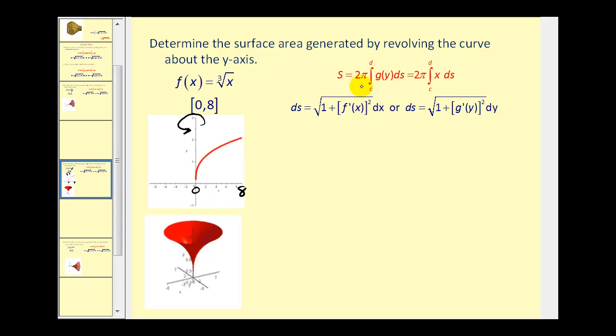Here's the formula for rotation about the y-axis. For this example, let's integrate with respect to y, which means we'll use the formula S = 2π times the integral of g(y) times the square root of 1 + [g'(y)]² dy. Notice we have to express our radius and the function in terms of y. So we'll have to take this function, y equals the cube root of x, and solve it for x.